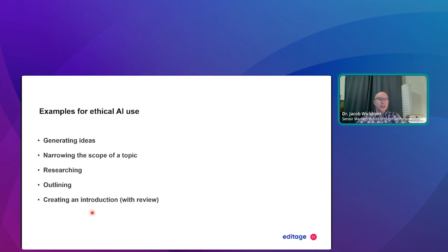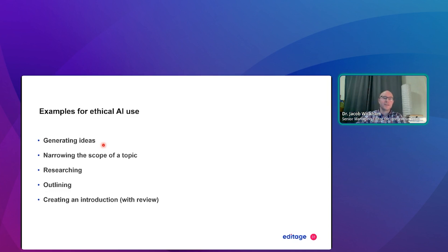Here are some examples of ethical AI use. Generating research ideas is appropriate in the very early stages of your research. There's actually a Google Research AI assistant to help generate ideas — the link will be shared during Q&A. Some of these tools can be quite good at helping you brainstorm, for example narrowing the scope of your topic.